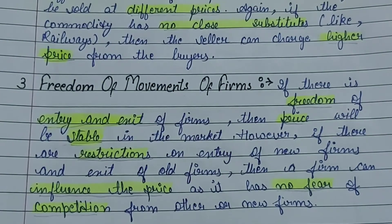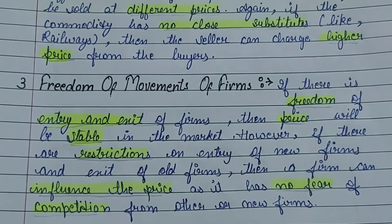Next point is freedom of movement of firms। जब entry या exit free होती है market में तो price stable होता है because there is competition। Whereas अगर entry या exit पर restriction होती है तो जो firm है वो price को बहुत influence करती है — उसे डर नहीं होता कि कोई competition है। क्योंकि उस market में आने के लिए बहुत सारी legal formalities complete करनी पड़ती हैं, या patents/copyrights का problem हो सकता है, so there is no competition और वो price को बड़ा influence करता है।